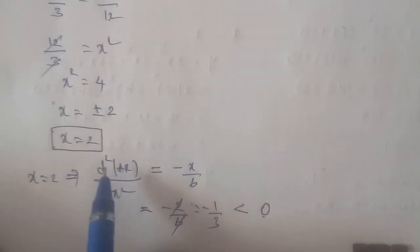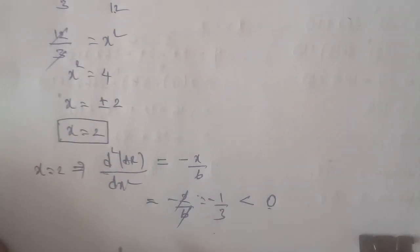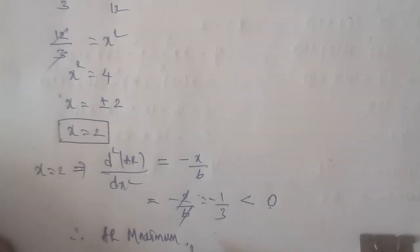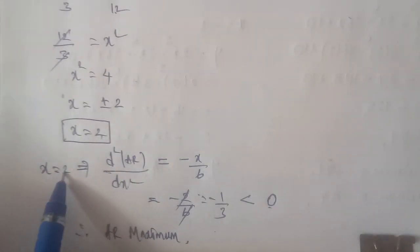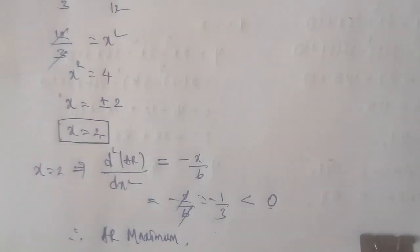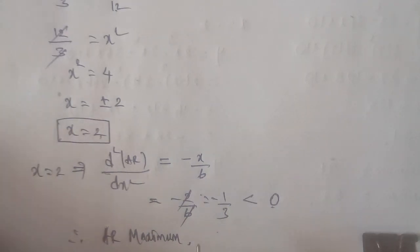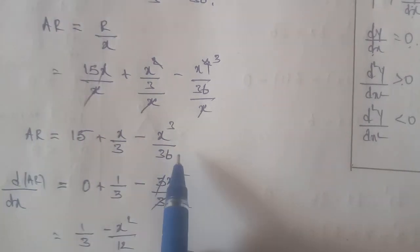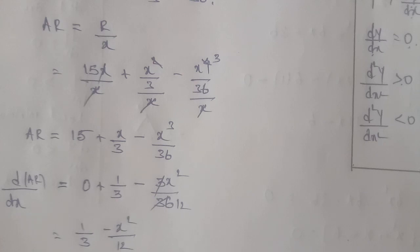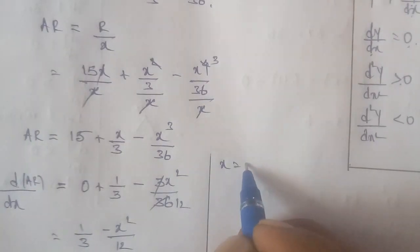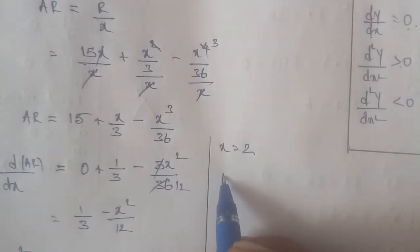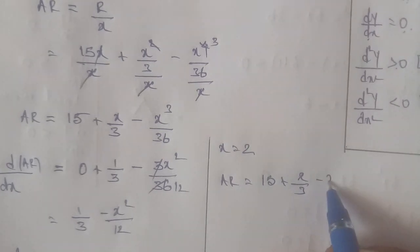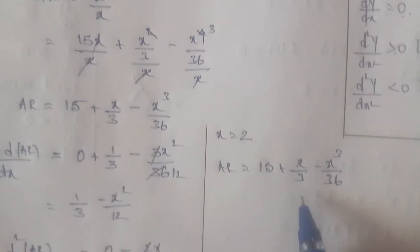So the average revenue is maximum at x = 2. Now we substitute x = 2 into the average revenue formula: AR = 15 + x/3 − x³/36. Substituting x = 2 gives AR = 15 + 2/3 − 2³/36 = 15 + 2/3 − 8/36.